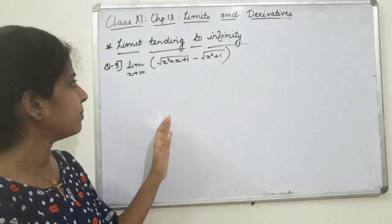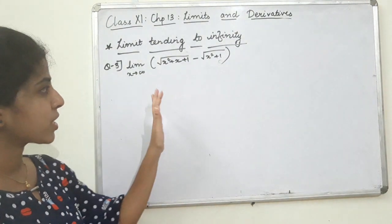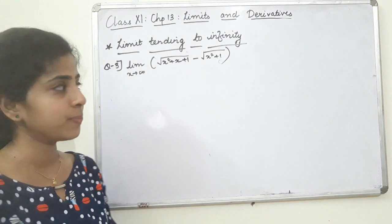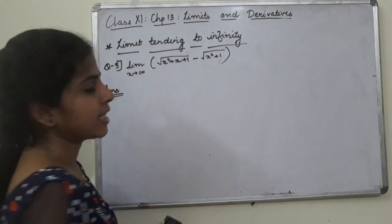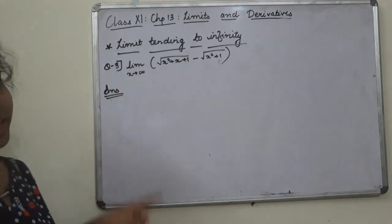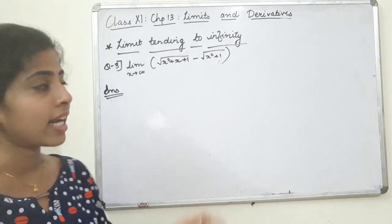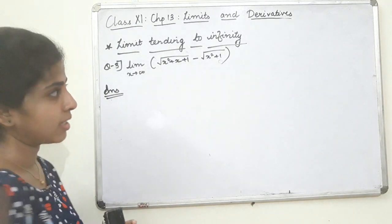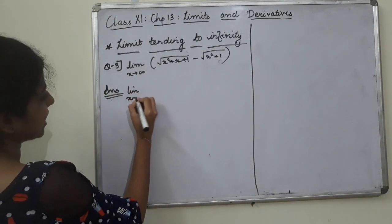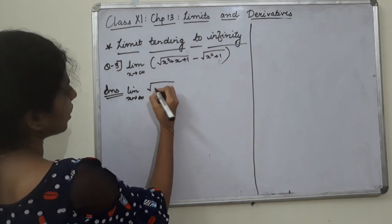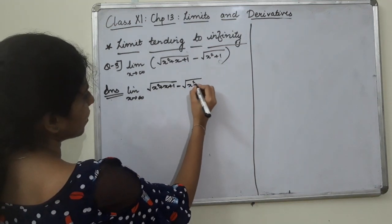We have one question about limit extending to infinity — what is the radical sign? We have to rationalize here. The problem is: limit as x tends to infinity of root of x squared plus x plus 1 minus root of x squared plus 1.